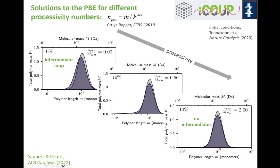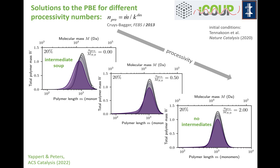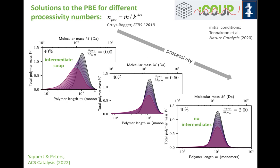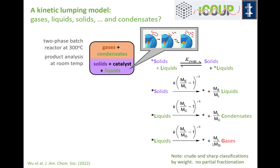We've gone from elementary steps in microkinetic modeling all the way to the population balance equation, encoding all those details. If you have a highly processive catalyst, you pull chains out of the bulk and completely digest them into monomers, so you don't see any buildup of intermediates. If you lose processivity, you pull chains from the bulk, cut them a couple of times, then let them go back, creating a soup of intermediates. There are process engineering implications — with a processive catalyst, you could keep adding polymers and the properties of the mixture would not really change.